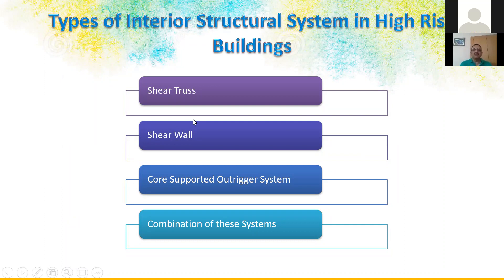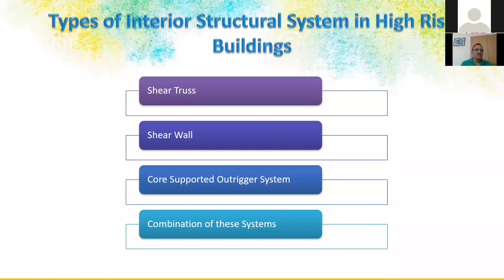The types of structural systems for high-rise buildings include shear truss, cantilever towers, shear walls, core-supported outrigger systems, and combinations. A high-rise building is essentially a tower — we must design primarily for wind forces using concepts of shear walls, core with outrigger systems, and combinations thereof.